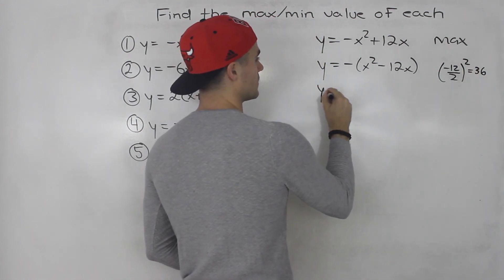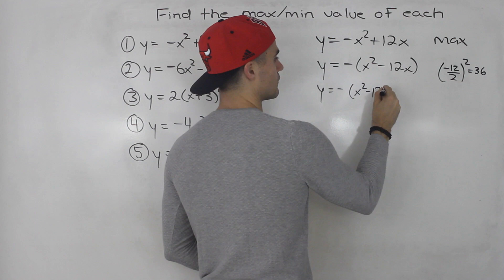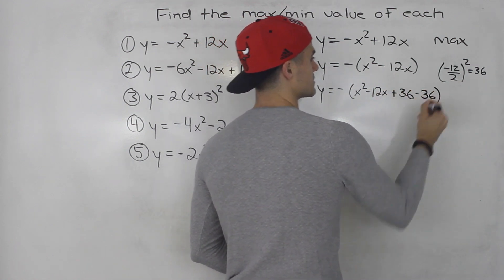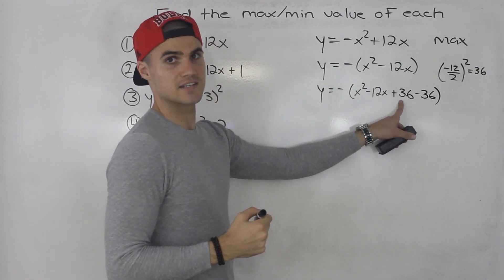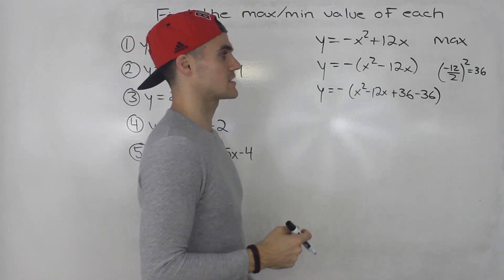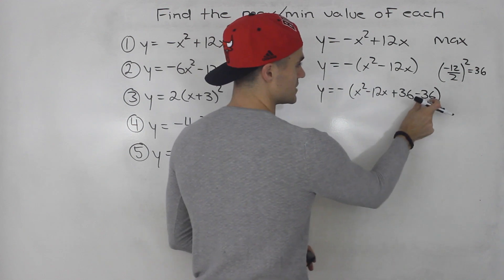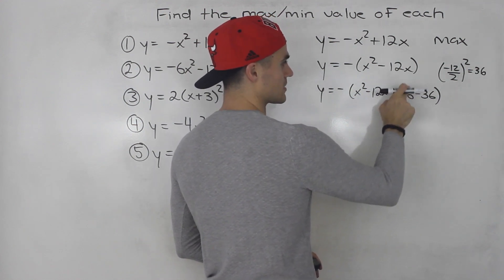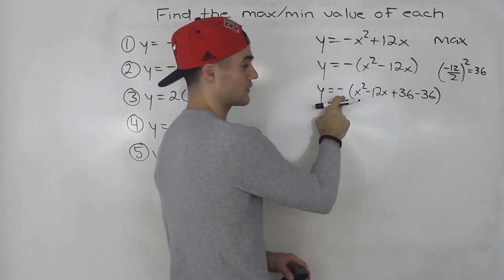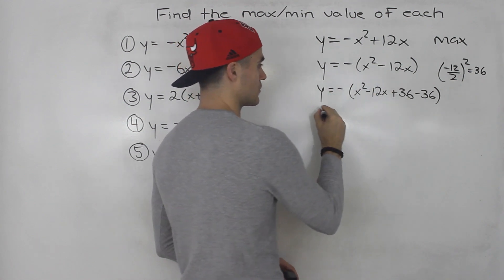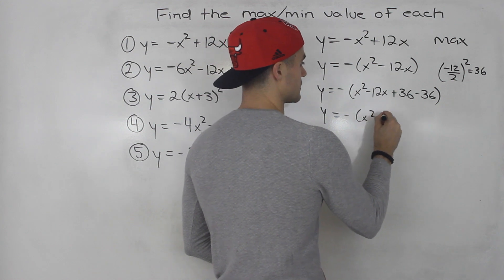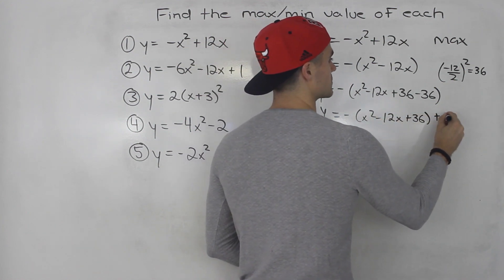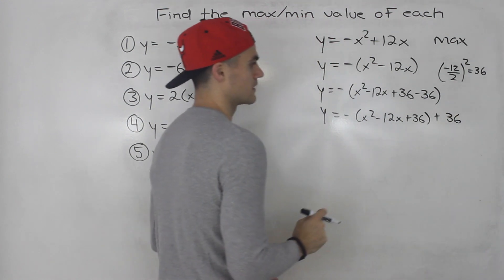So you rewrite it as negative x squared minus 12x, then plus 36 minus 36 — it's like adding zero, since plus 36 minus 36 is zero. Then you take the negative 36 out of the bracket, but you have to multiply by what's in front: negative one times negative 36 gives us positive 36.